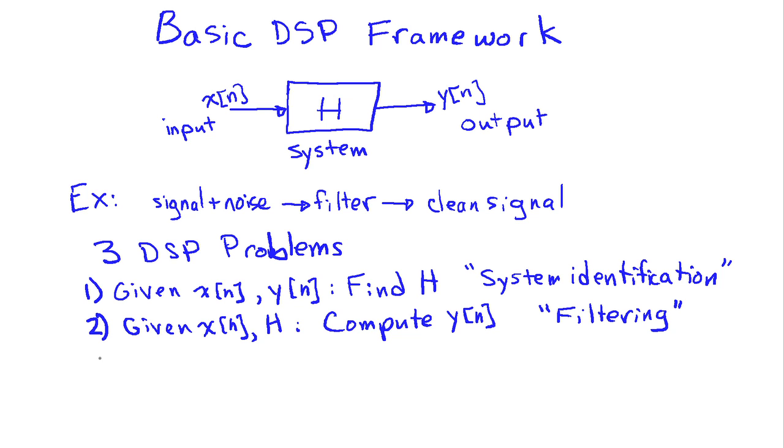So the third problem, obviously, is when we are given the output and the system, but we don't know what the input was. And so we want to find the input x of n. And this problem is typically called equalization. It's sometimes called an inverse problem because we want to go backwards. We're given the output, we want to put the output backwards through the system to figure out what input would have resulted in that particular output.